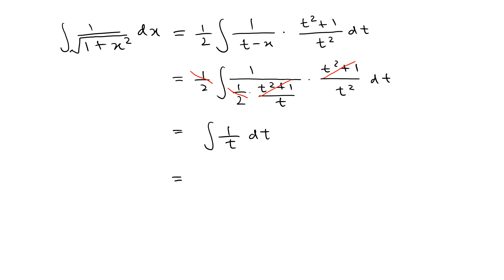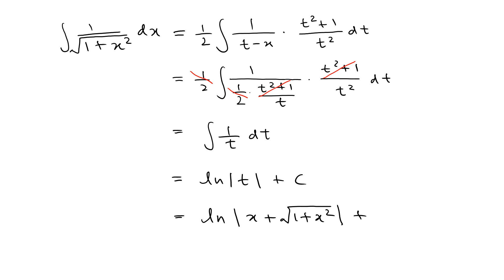The integral of 1 over t dt is simply the natural log of t plus C. Recalling that t equals x plus the square root of 1 plus x squared, we get the final answer: natural log of x plus square root of 1 plus x squared, plus C. That's where all those complicated terms appear naturally. This is how you integrate 1 over square root of 1 plus x squared using Euler substitution type 1, and this method can be applied to other problems with square root terms of this form.